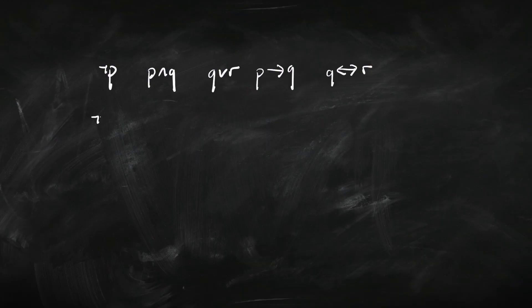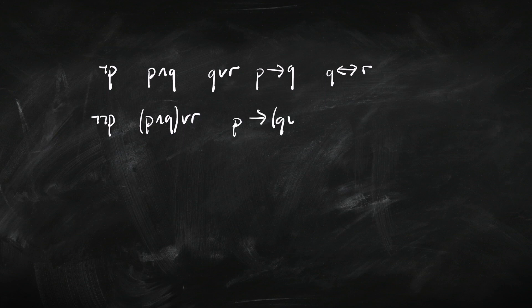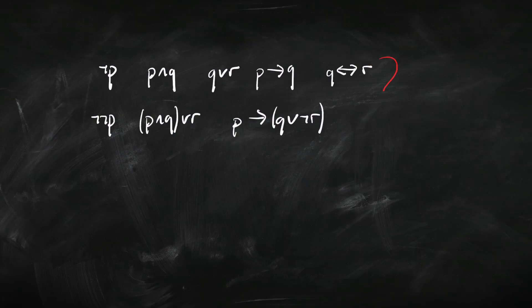So we can have things like not-not-P, or P-and-Q-or-R, or if-P-then-Q-or-not-R. We can take already-built sentences and combine them into new, more complex sentences, and we can keep repeating that process. All sentences we can make this way are part of the language of propositional logic — these are called complex sentences.